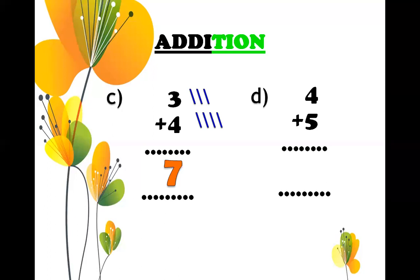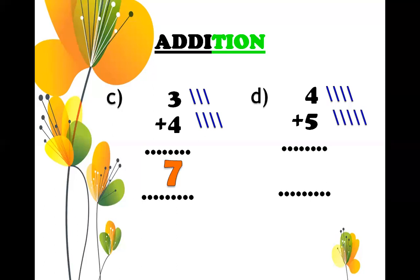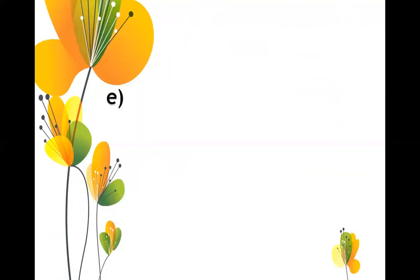Now next: 4 plus 5. Draw four lines in front of number 4: one, two, three, four. In front of number 5, draw five lines: one, two, three, four, five. Count all the lines: one, two, three, four, five, six, seven, eight, nine. Nine is the answer, write nine. Like that you have to do your additions.